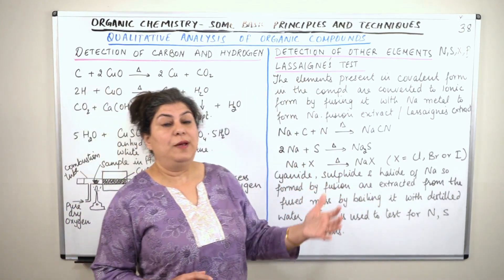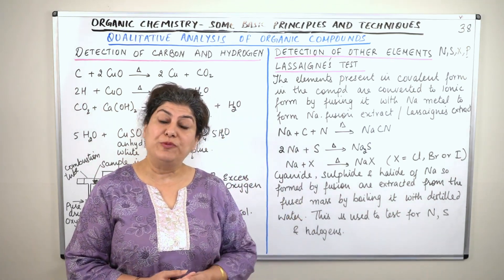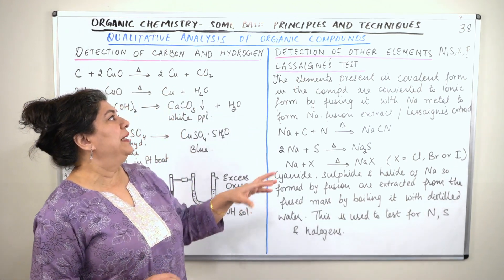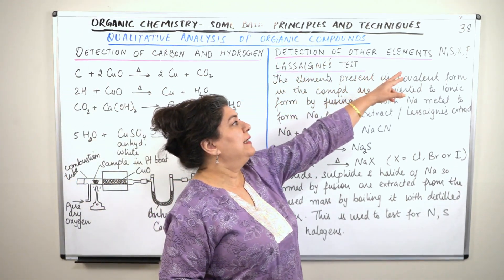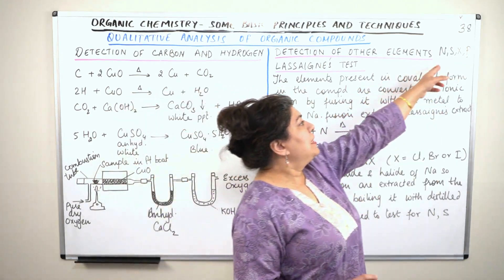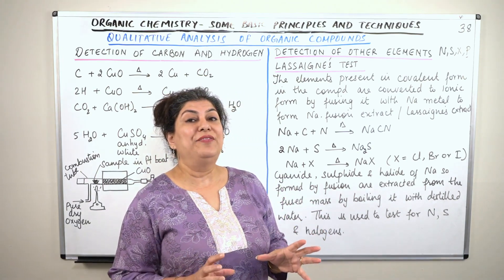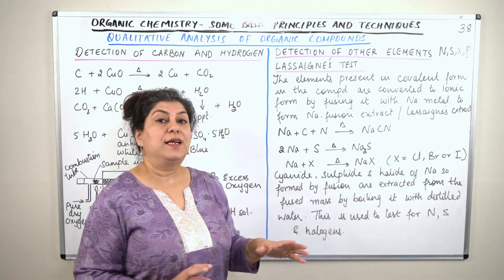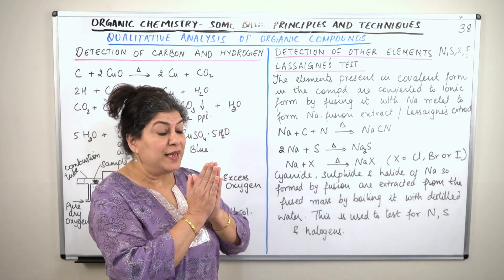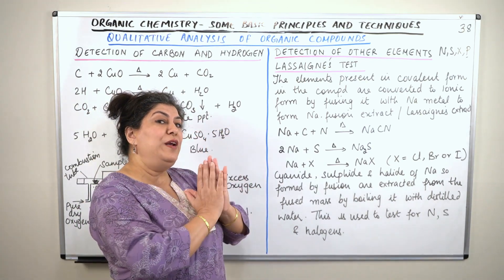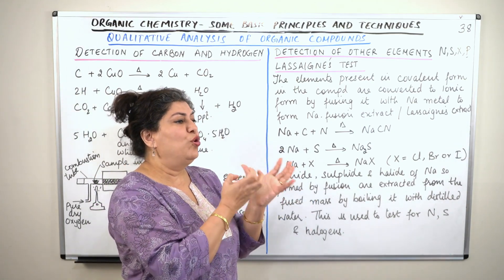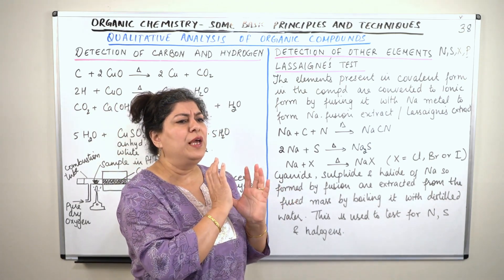Once we confirm that carbon and hydrogen are present, we confirm this is an organic compound. The next step is to check if other elements are present due to functional groups — specifically the detection of nitrogen, sulfur, halogens, and phosphorus. These are in your syllabus. To identify nitrogen, sulfur, and halogens, they must be converted into ionic form.